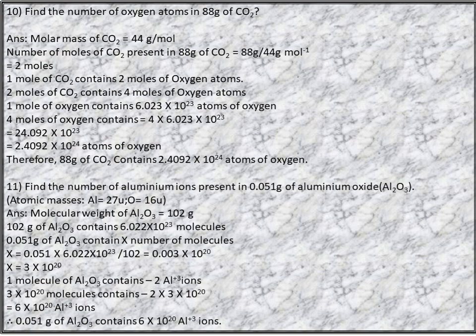Q10: Find the number of oxygen atoms in 88g of CO₂. Molar mass of CO₂ = 44g/mol. Moles of CO₂ = 88 ÷ 44 = 2 moles. 1 mole of CO₂ contains 2 moles of oxygen atoms, so 2 moles CO₂ contains 4 moles of oxygen atoms. 4 moles of oxygen = 4 × 6.022 × 10²³ = 24.092 × 10²³ = 2.4092 × 10²⁴ oxygen atoms.